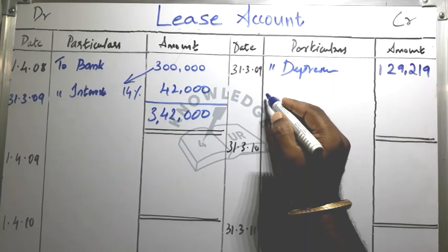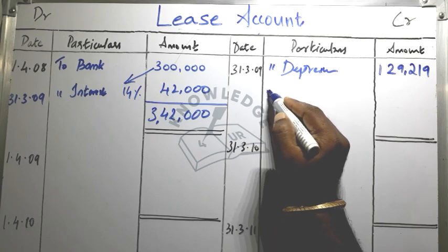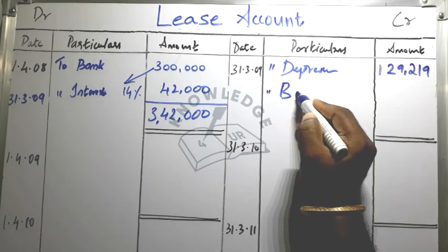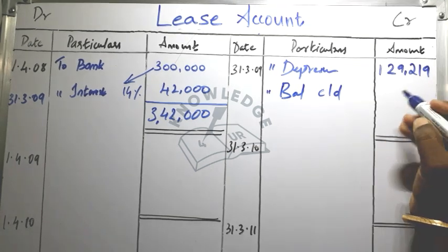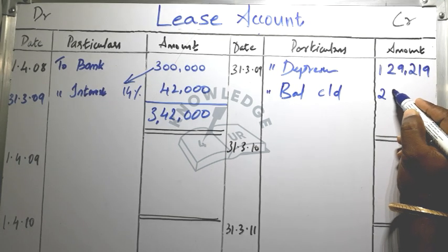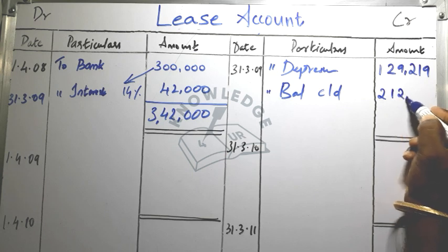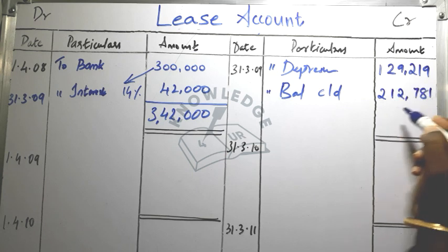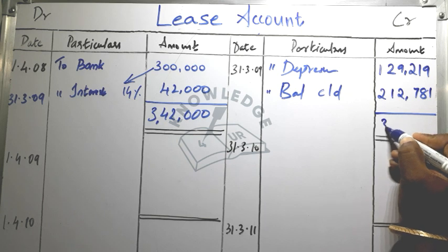We close the account for the first year. The balance carried down is 2 lakhs 12,781 — that is, the opening balance for the next year is 2,12,781.